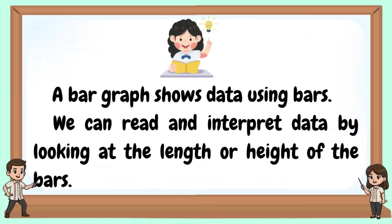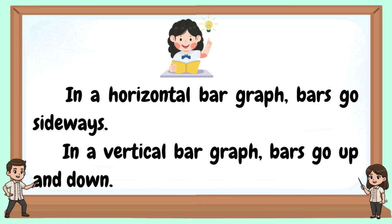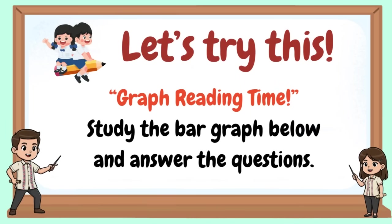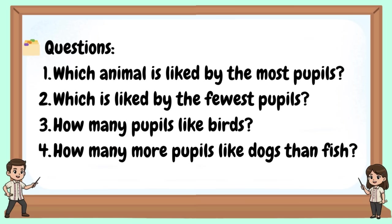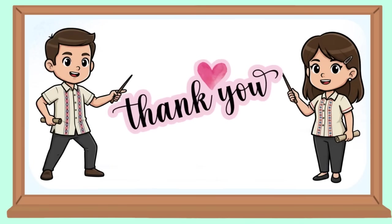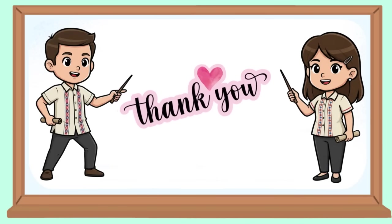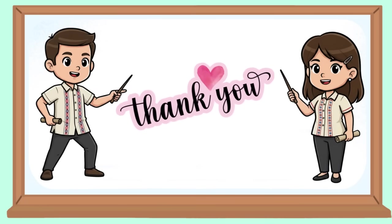A bar graph shows data using bars. We can read and interpret data by looking at the length or height of the bars. In a horizontal bar graph, bars go sideways. In a vertical bar graph, bars go up and down. Let's try this — graph reading time. Study the bar graph below and answer the questions. Thank you for watching. See you in our next mathematics lesson. Goodbye!